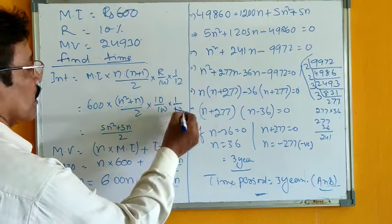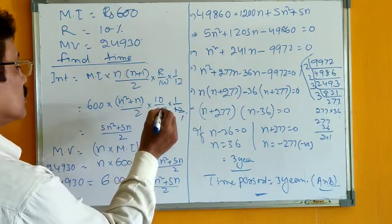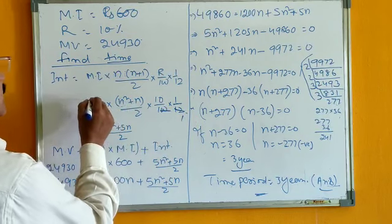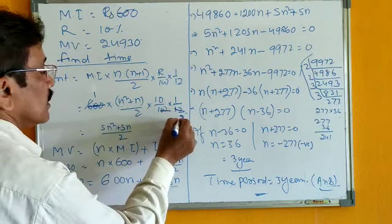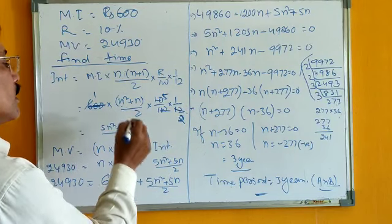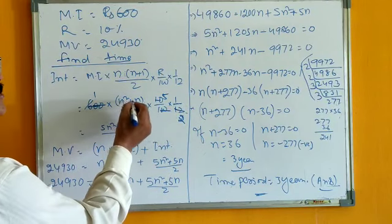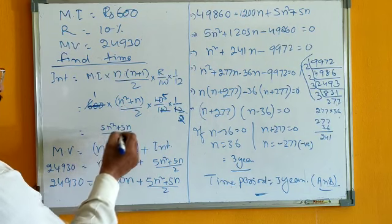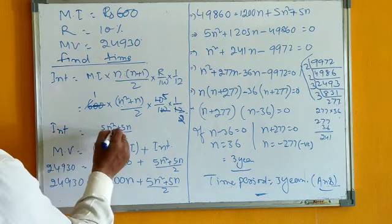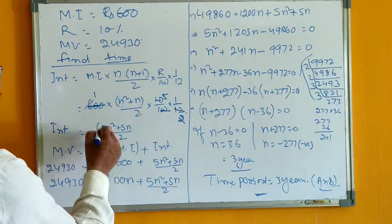Now, simplify 12, 1, 2, cancel terms... multiply 5 into N square plus N, that is 5N square plus 5N by 2. So, interest is equal to 5N square plus 5N by 2.